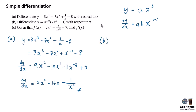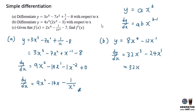For question B, first expand the equation. You will have ax to the power of 4 minus 12x squared. To differentiate this, times the power with the value in front: 32x to the power of 3, minus 24x to the power of 1, since 2 minus 1 equals 1. The final answer will be 32x cubed minus 24x.